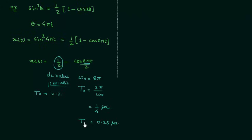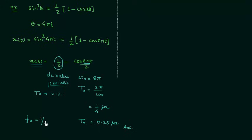This is the fundamental period of cos(8πt)/2. Since 1/2 is periodic with undefined fundamental period, the fundamental period of signal x(t) is also 0.25 seconds. The fundamental frequency f₀ = 1/T₀ = 1/0.25 = 4 Hz.